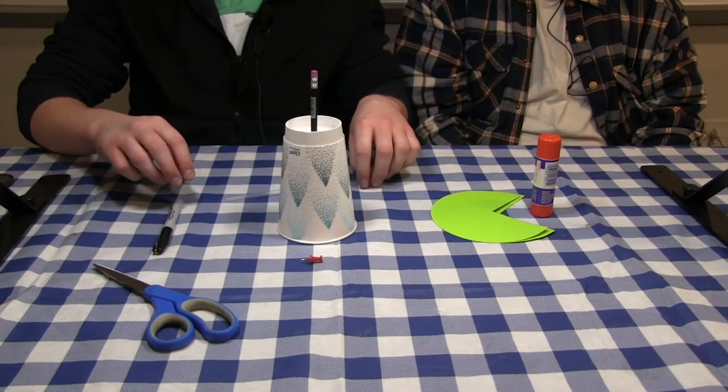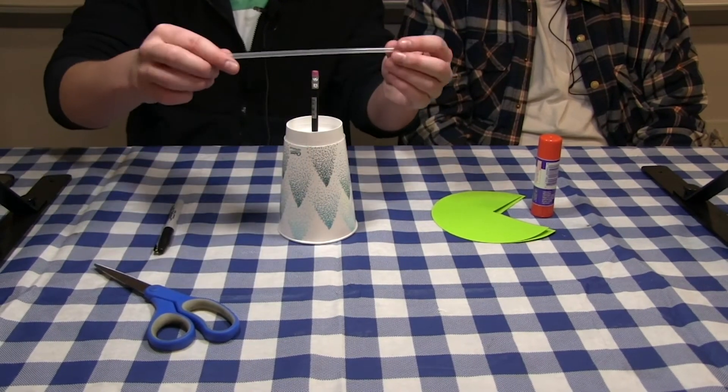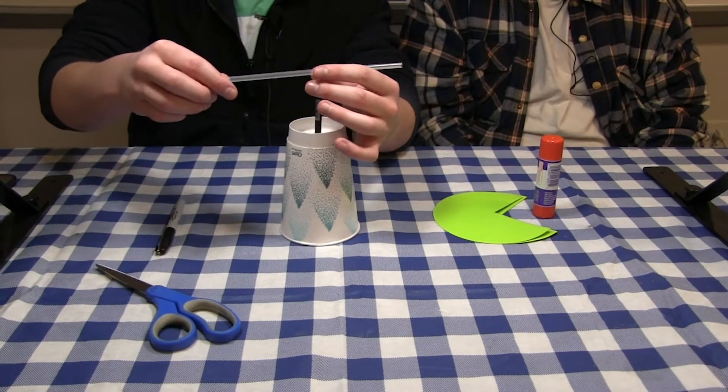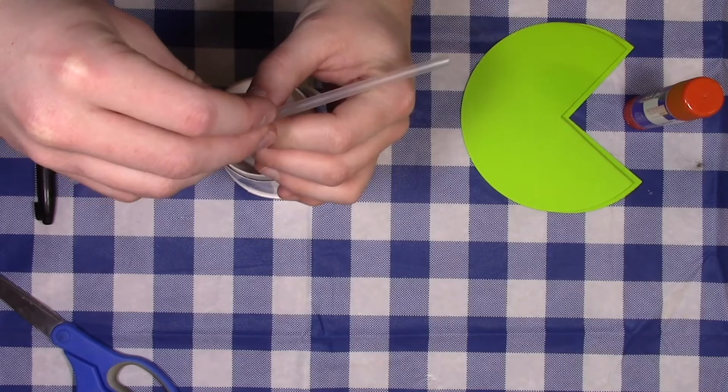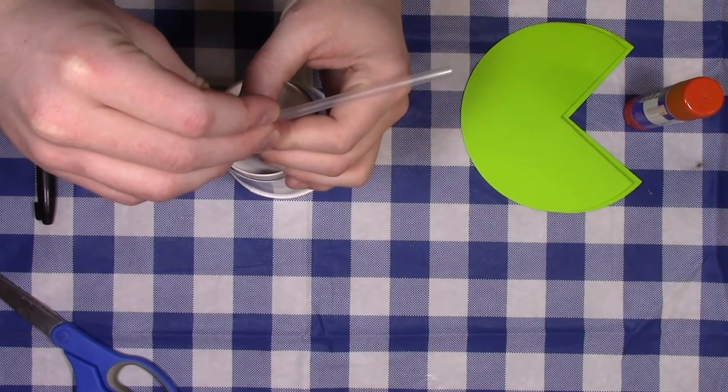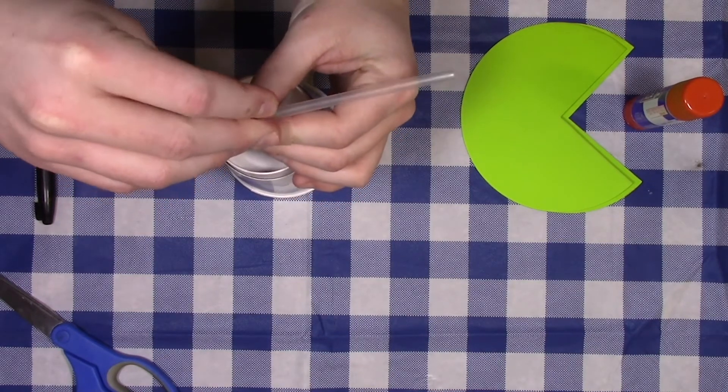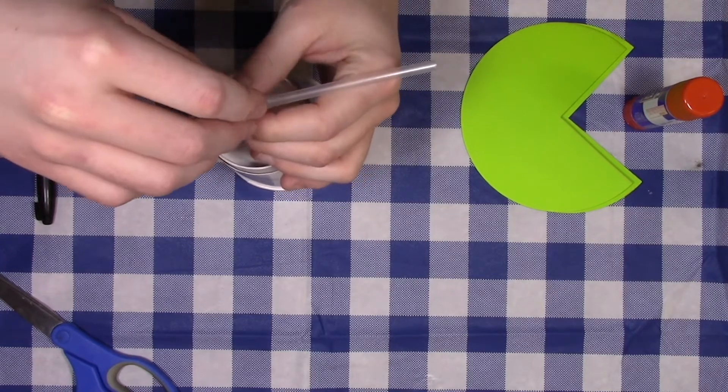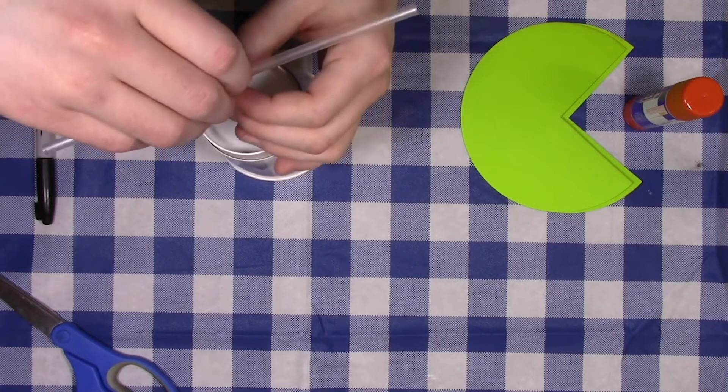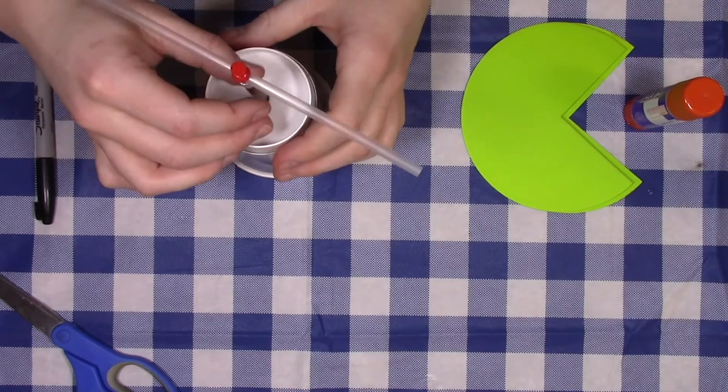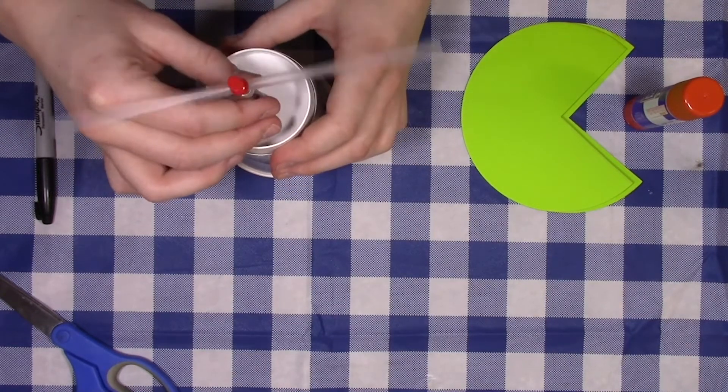Take the straw, put it on the pencil approximately centered, and push the pushpin through the straw into the eraser of the pencil. Too tight. Okay. And it should spin freely.